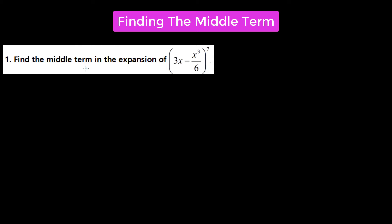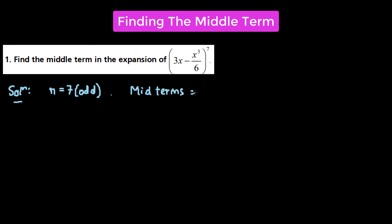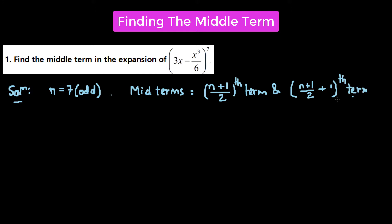In this question, we have to find the middle term in the expansion of (3x - x³/6) raised to the power of 7. We see that the index n is 7, which is an odd number. So when n is an odd number, we have two middle terms, given by the formula: the (n+1)/2-th term and the (n+1)/2 + 1-th term.